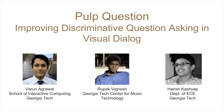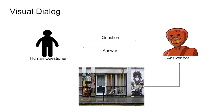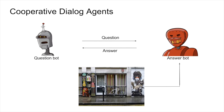Pulp Question: Improving Discriminative Question Asking in Visual Dialogue. To improve the question asking, we have a visual dialogue setup where instead of using a human to ask questions, we generate questions using a question bot.